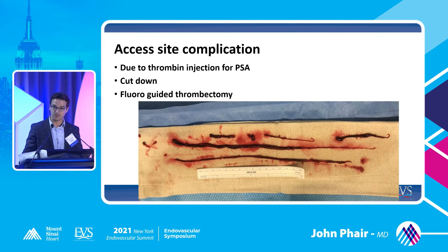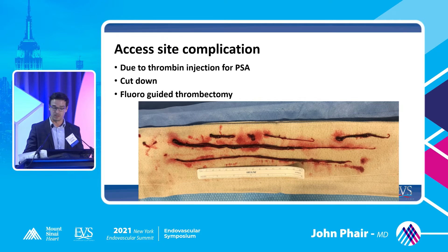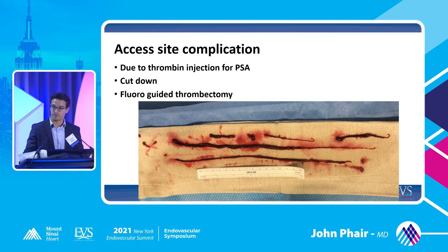Access site complications can be due to a lot of things. The title of this talk was vessel closure. This is a patient who had thrombin injected into a pseudoaneurysm, and the thrombin went into the native system and closed off every single vessel below the leg. We cut down immediately and did a fluoroscopic guided thrombectomy with a Fogarty down all the vessels through a single groin cut down. These groin cut downs can be done with sedation and local anesthesia if needed, and using a fluoroscopic guided hybrid approach, you're able to avoid a popliteal cut down.